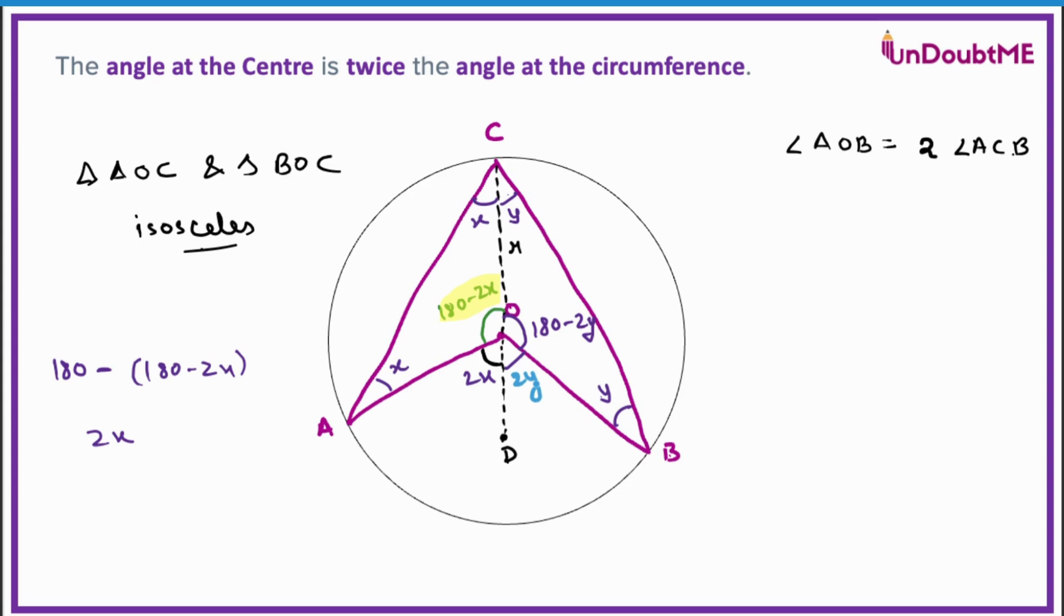Now, interestingly, by doing that, we have got angle AOB. AOB is 2X plus 2Y, which can also be written as twice of X plus Y. And if you look above, angle ACB is what? It is X plus Y. We have X plus Y over here. So from here, we are done that angle AOB is twice of angle ACB hence proved. That's why we can say that angle at the center is twice the angle at the circumference.